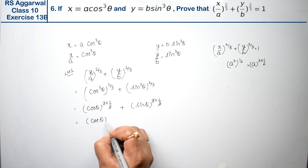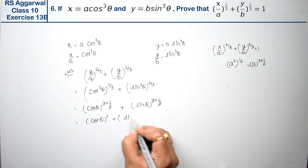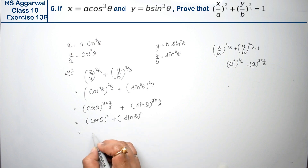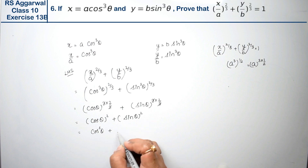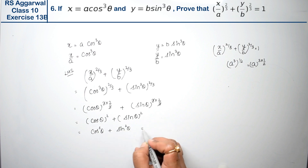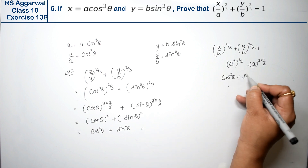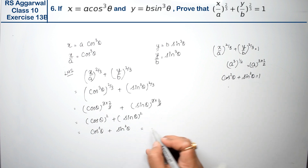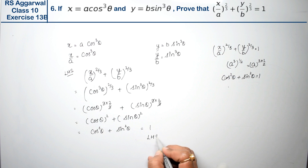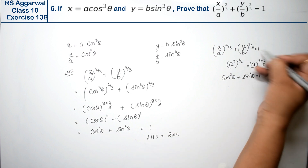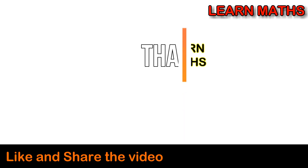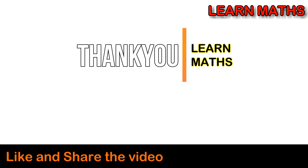So we get cos²θ + sin²θ, and we know that cos²θ + sin²θ = 1. So we write 1 in its place. Hence proved — the left-hand side equals the right-hand side, which is 1. That's what we needed to prove. Thank you. If you understand the step-by-step solution, please subscribe to my channel on maths and share it with your friends. Bye-bye.